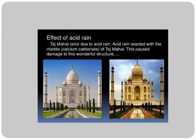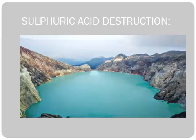Look at the effect of acidic rain on the Taj Mahal — it is one of the wonders of the world which is being damaged by acidic rain because it is made of marble, which is calcium carbonate. When acidic rain falls on calcium carbonate, it highly reacts with it causing destruction. This shows sulfuric acid destruction on a lake, which has been completely destroyed due to acidic rain.